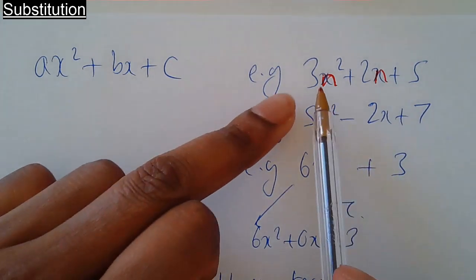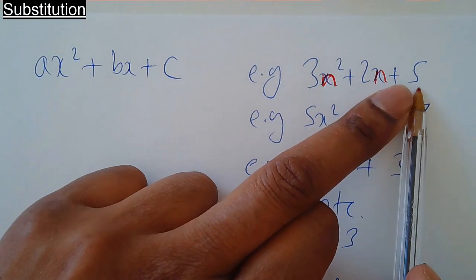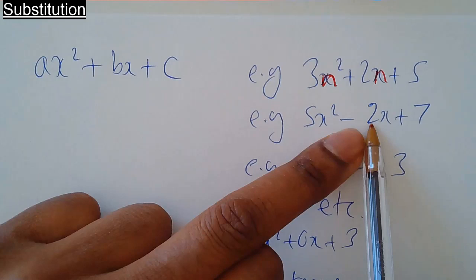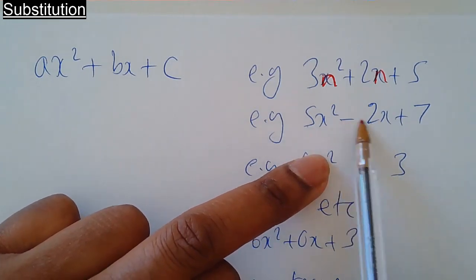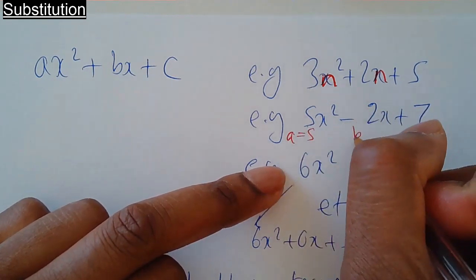And the other thing I want to mention: I said a is equal to 3, b is equal to 2, c is equal to 5. Here, a is equal to 5, but here b is actually equal to negative 2, so the sign is always important. So this one, a is equal to 5, b is equal to negative 2, c is equal to 7.